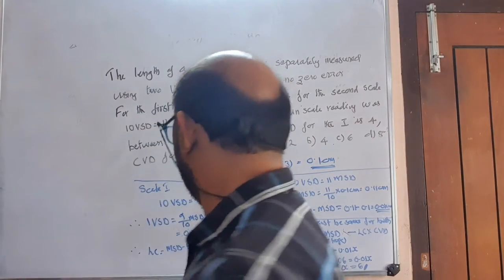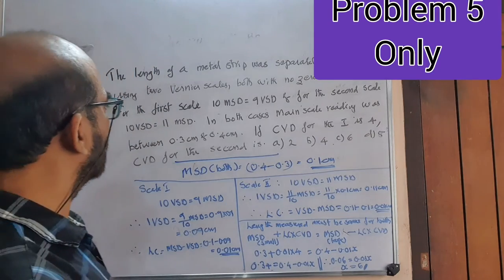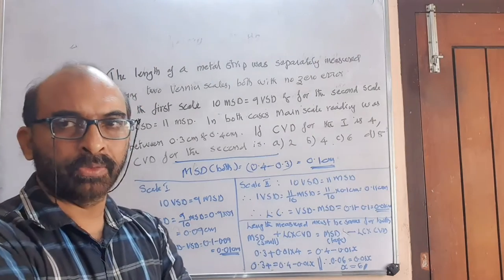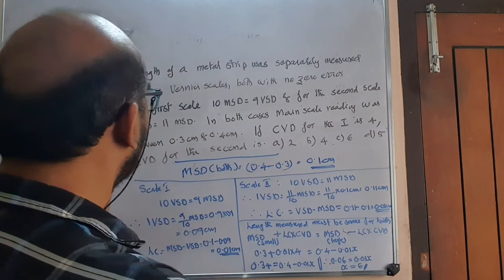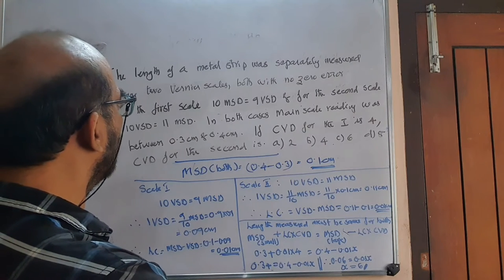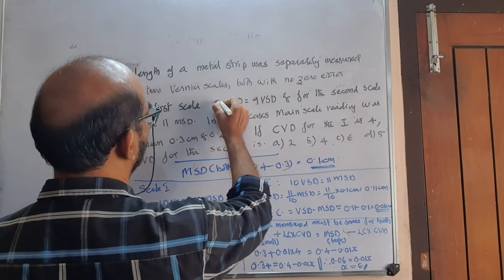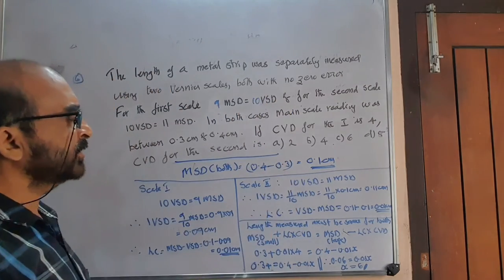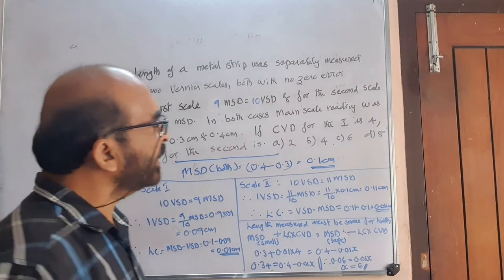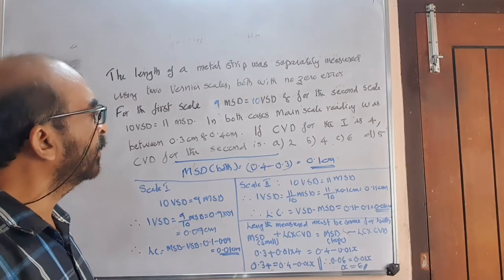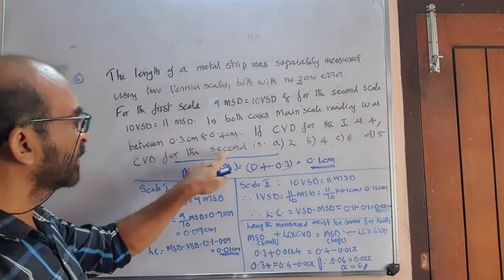The sixth problem: the length of a metal strip was separately measured using two vernier scales, both with no zero error. For the first scale, 9 MSD equals 10 VSD. For the second scale, 10 VSD equals 11 MSD. In both cases, main scale reading was between 0.3 and 0.4 centimeter. If the coinciding vernier division for the first scale is 4, what is the coinciding vernier division for the second scale?